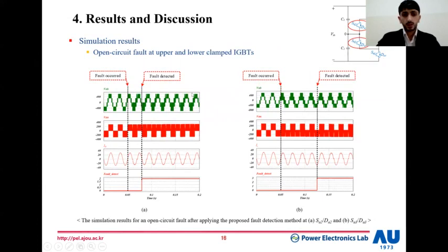Now we have an open circuit at the upper and lower clamp IGBT, SA2 and SA3, as shown in these two figures respectively. The zero state here, it's very clear how the disturbance only in the zero state, but the fault can be detected and remarked by two and three respectively.